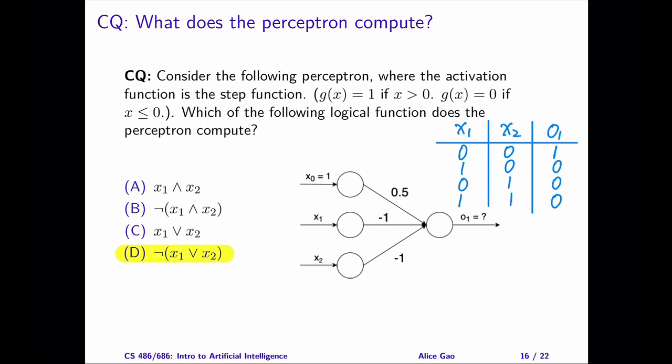Here's the complete truth table. Next, we need to stare at the truth table and figure out the function that O1 is representing. It looks like a negative version of the OR function. The OR function would be true if at least one of x1 and x2 is true. And this looks like the opposite of that.